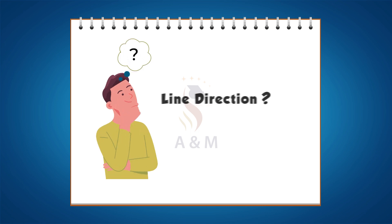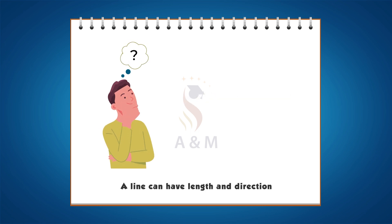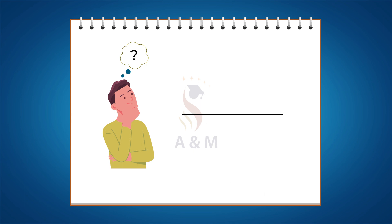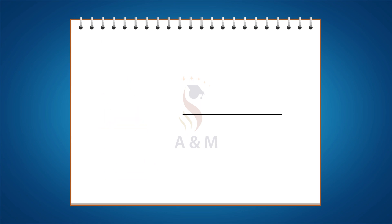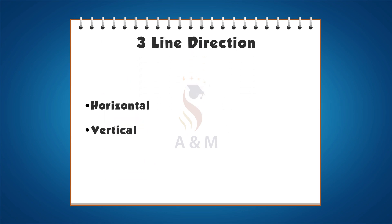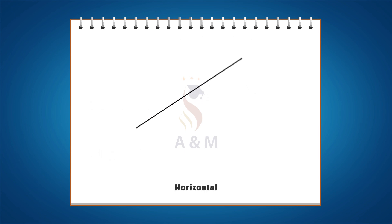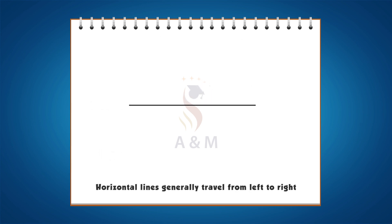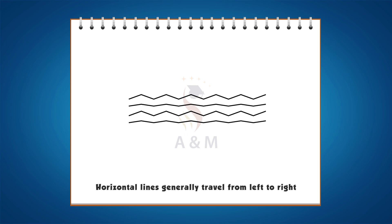What is line direction? A line can have length and direction, and the orientation of a line can send different types of messages to the brain of the viewer. The three directions common in designs that are used to direct the eye are: Horizontal. Horizontal lines generally travel from left to right and are relative to the horizon.